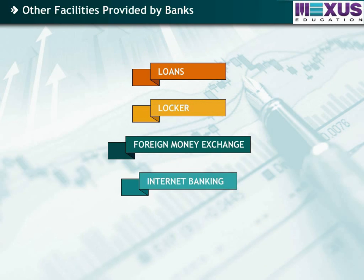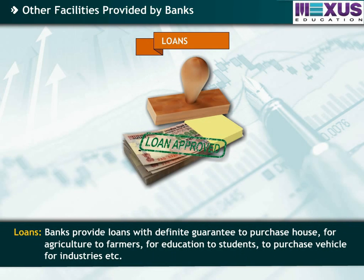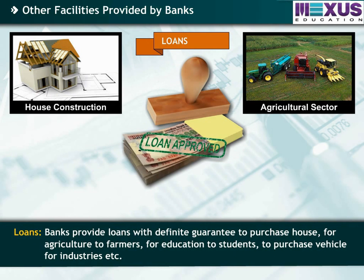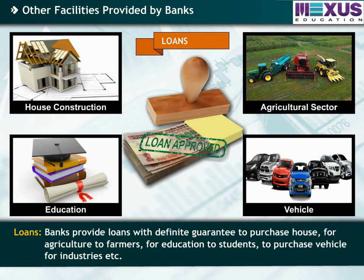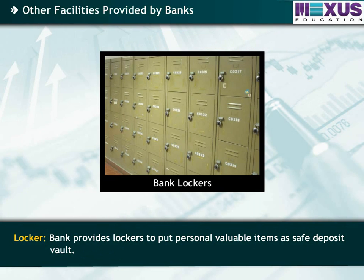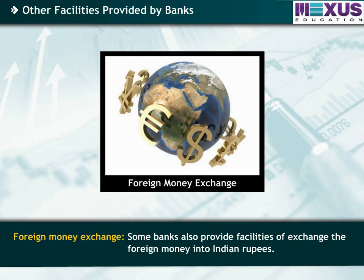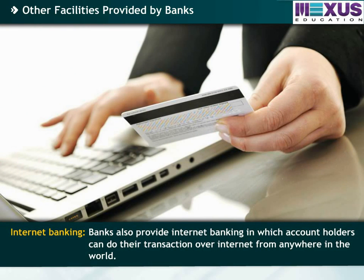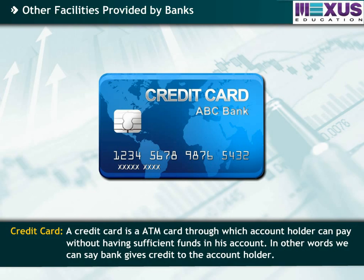Banks also provide many other facilities. Loans: banks provide loans with definite guarantee to purchase a house, for agriculture to farmers, for education to students, to purchase a vehicle, for industries, etc. Locker: banks provide lockers to put personal valuable items as a safe deposit vault. Some banks also provide facilities to exchange foreign money into Indian rupees. Internet banking: banks provide internet banking in which account holders can do their transactions over the internet from anywhere in the world. A credit card is an ATM card through which account holders can pay without having sufficient funds in their account — in other words, the bank gives credit to the account holder.